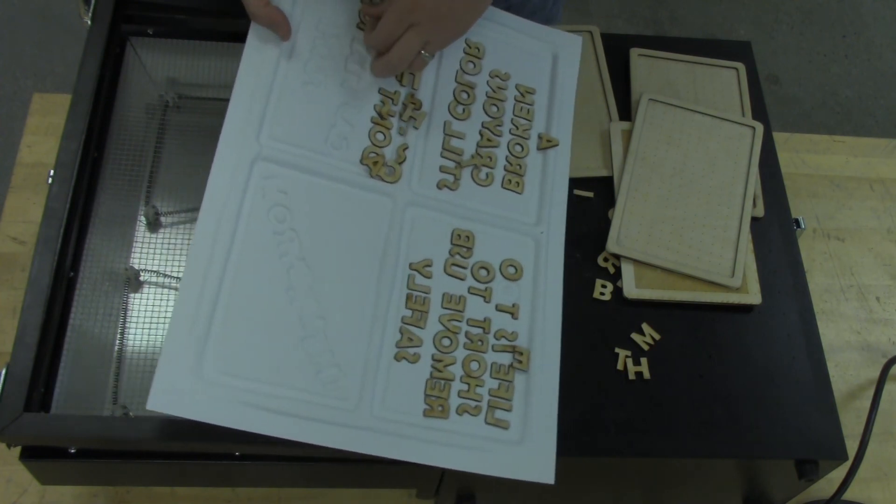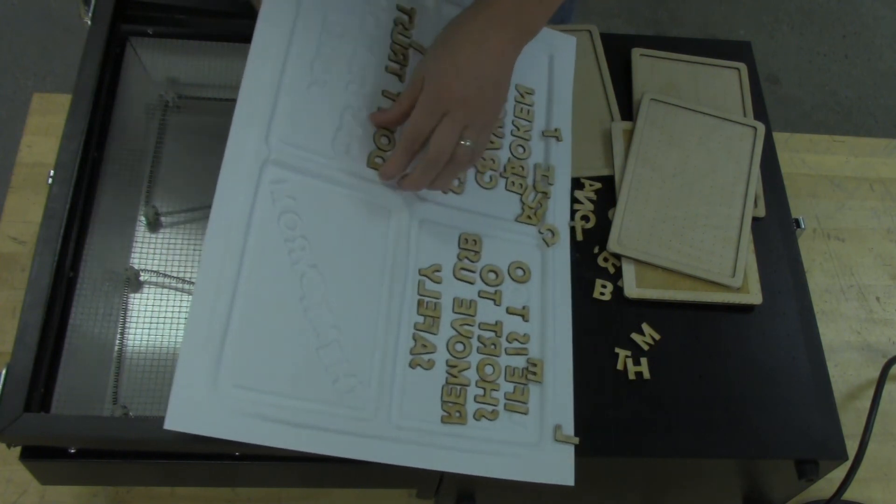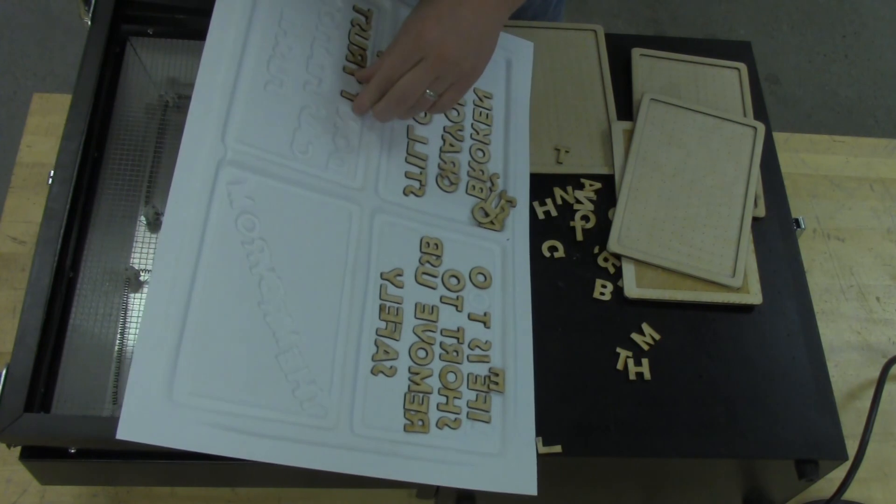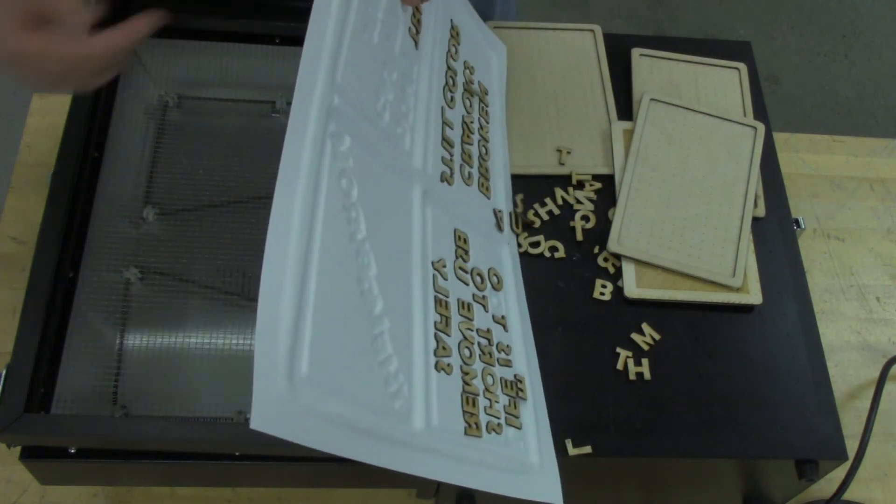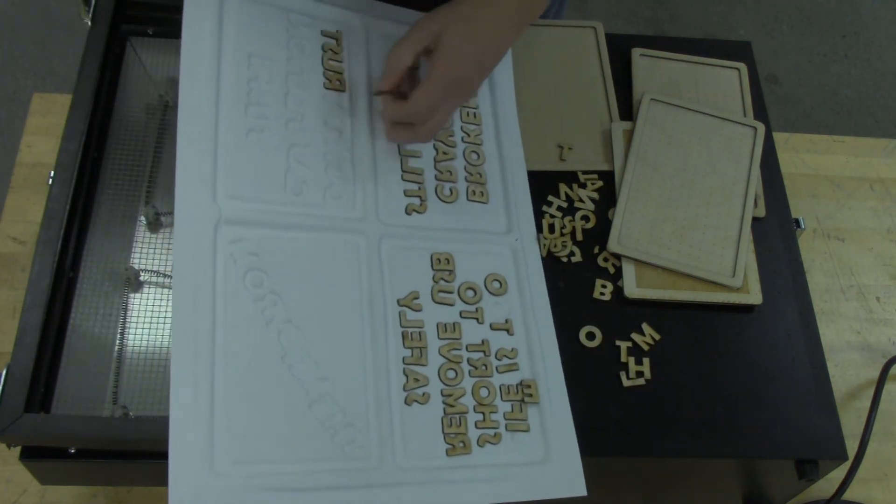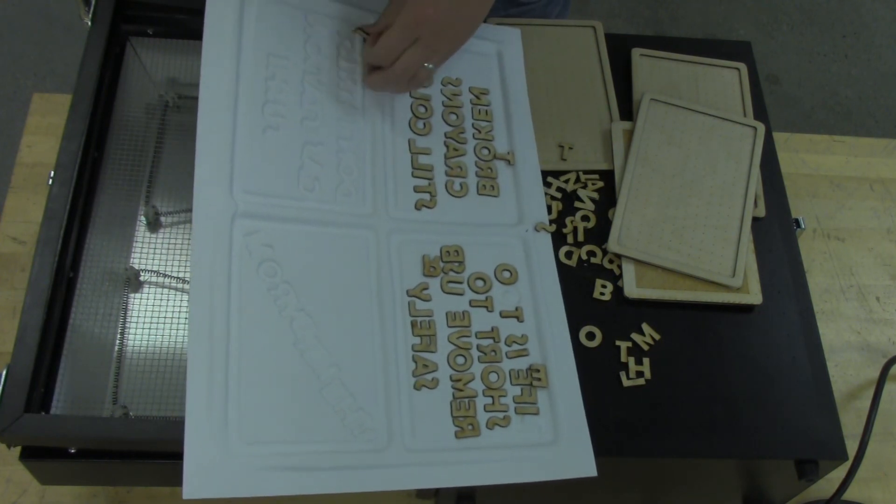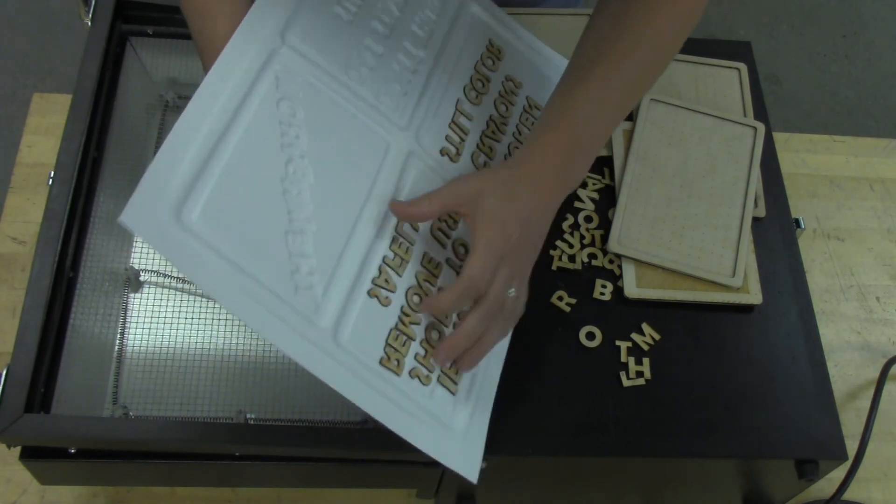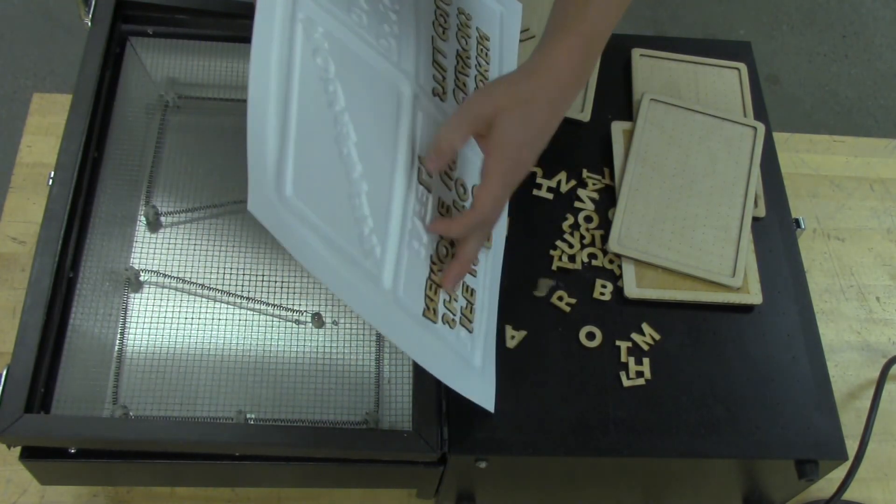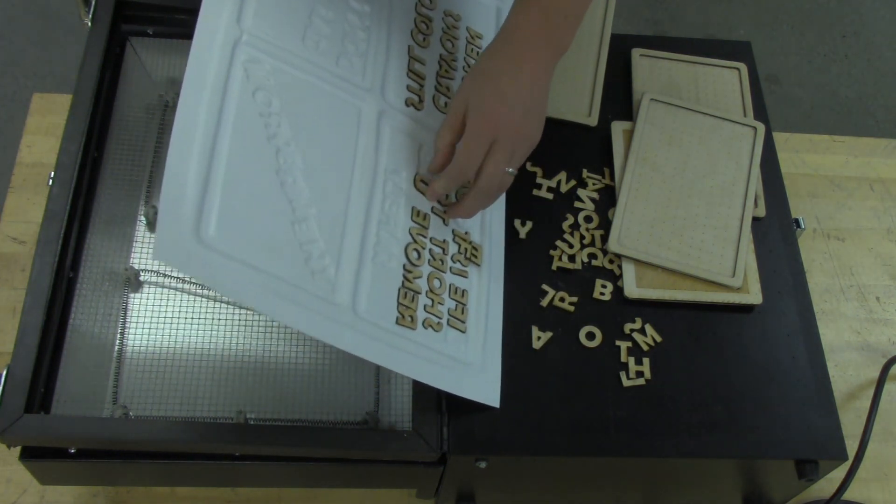In order to do this you have to have a laser cutter, or if you're willing to sit at a scroll saw for hours on end cutting out letters you could do that. There's different ways you can make letters or you can buy them pre-made or find somebody who has a laser cutter and see if they'll help you make them. It's a good activity to show kids how a vacuum form machine works.